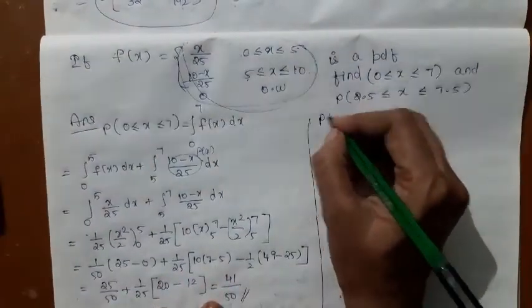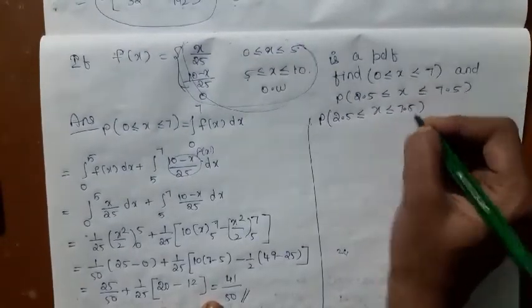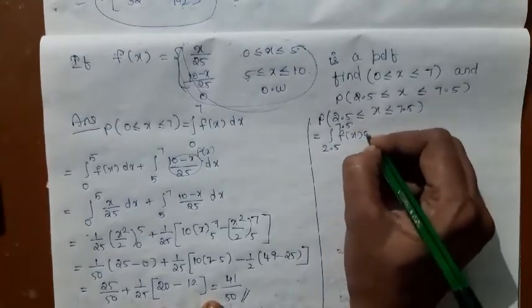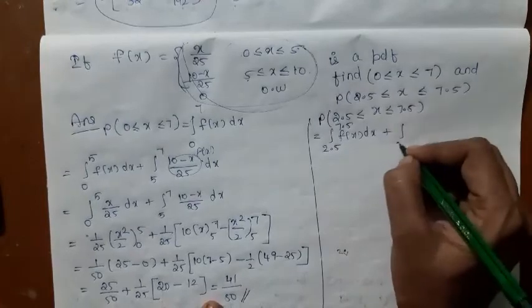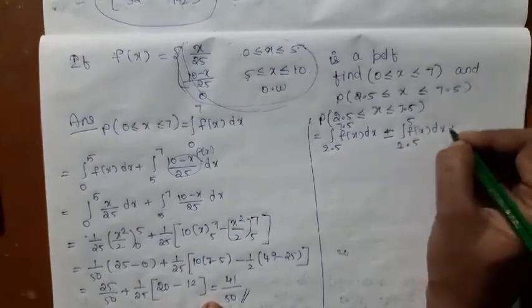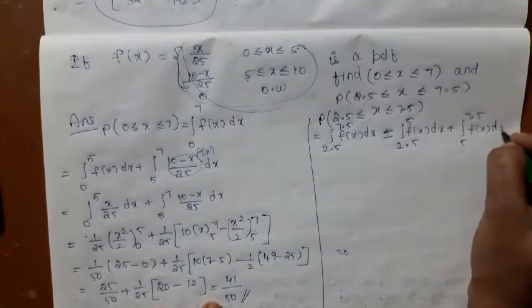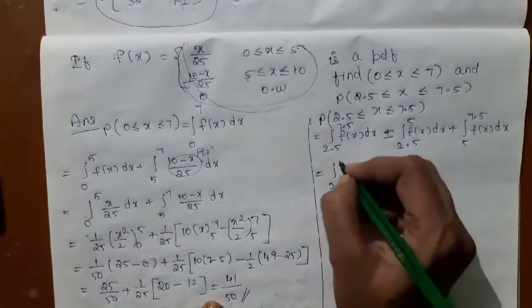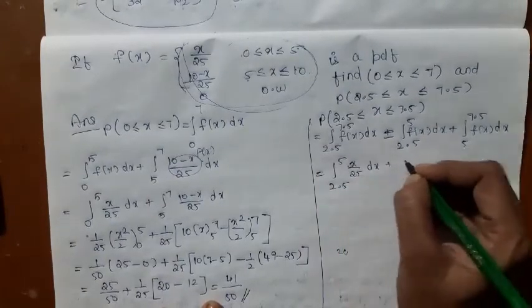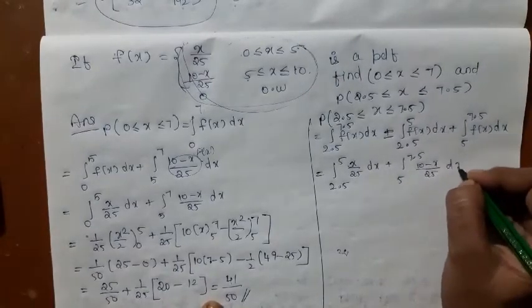Let us compute the probability that 2.5 ≤ x ≤ 7.5. You integrate from 2.5 to 7.5, splitting at 5 since the function changes there. Integral from 2.5 to 5 of x/25 dx plus integral from 5 to 7.5 of (10 − x)/25 dx.